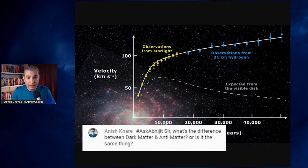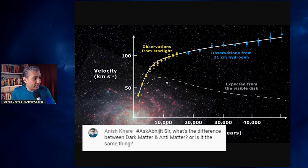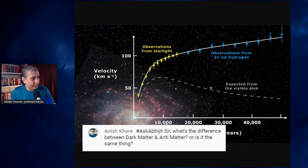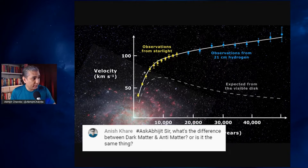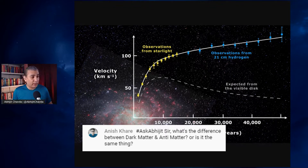So let me show that — it's called rotation curves. The white dashed line is what we expect from the visible disk of a typical galaxy, based on calculations and the laws of physics and the amount of matter we can observe. And what we see is very different. The yellow and blue points are observational evidence, and they are very different. The rotation curves of galaxies show they rotate faster than what we would expect.